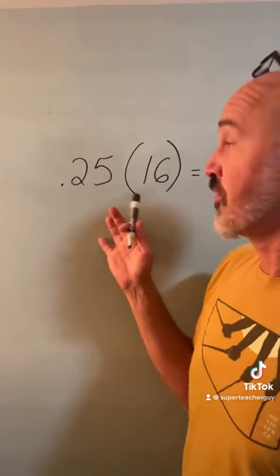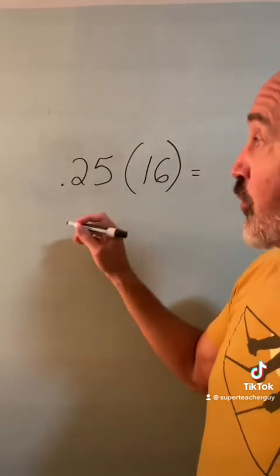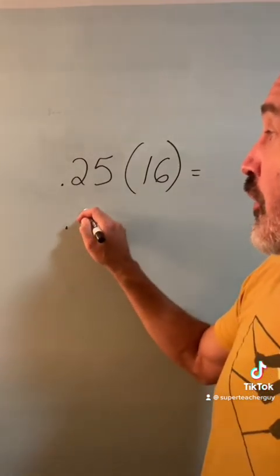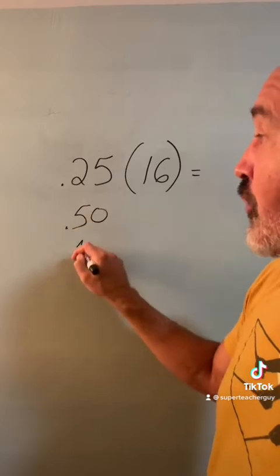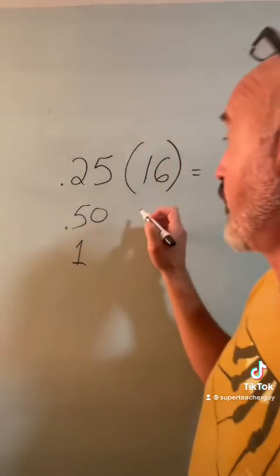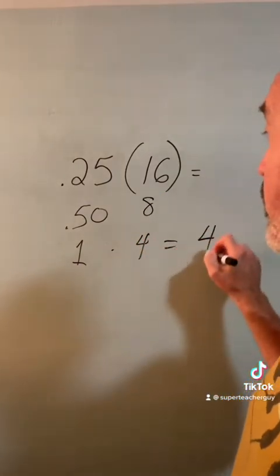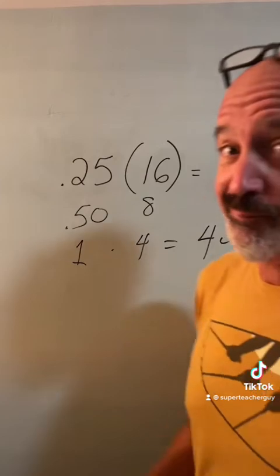0.25 times 16 is hard to do in your head, but if you double 0.25 twice to go to 0.50 and then to 1, and you're doubling this twice, you've got to cut this in half twice, so it goes down to 8 and then to 4, and 1 times 4 is 4. Same answer. That's a good example.